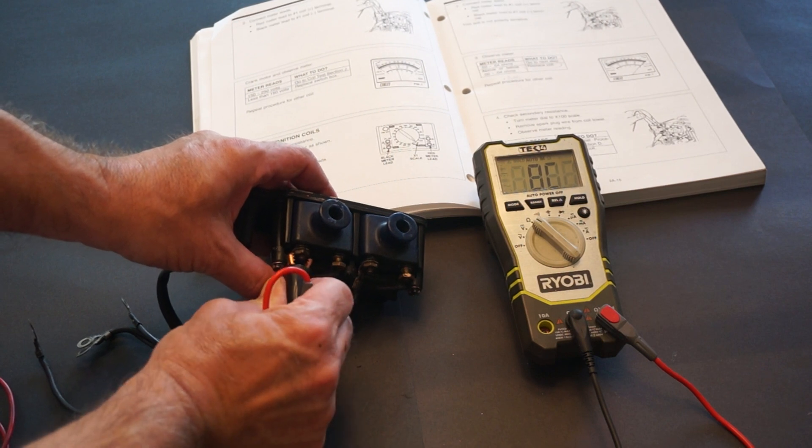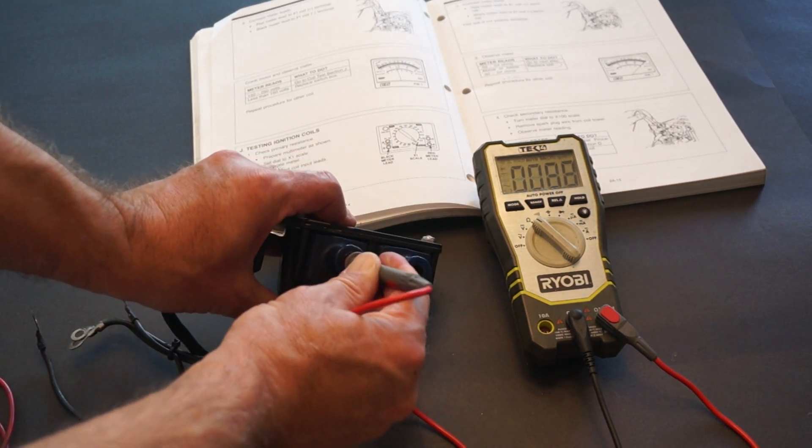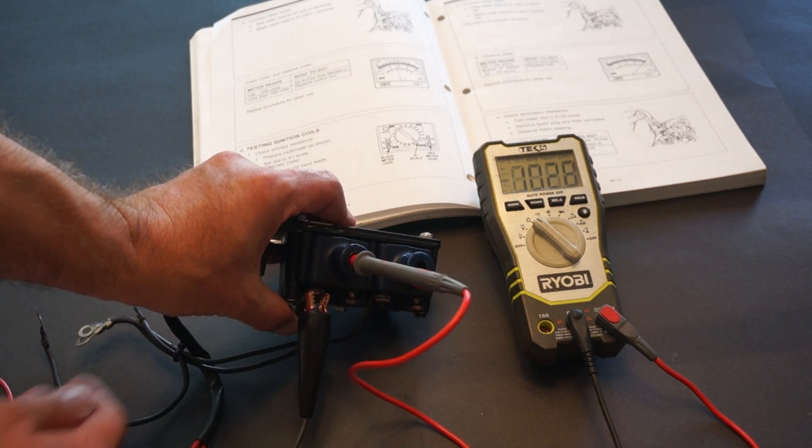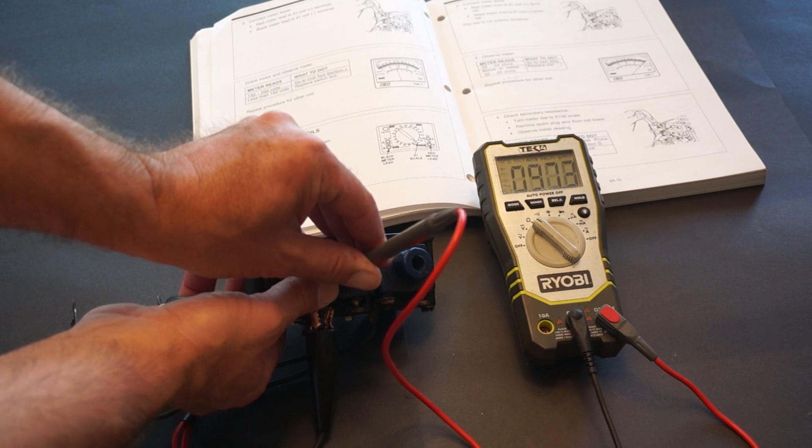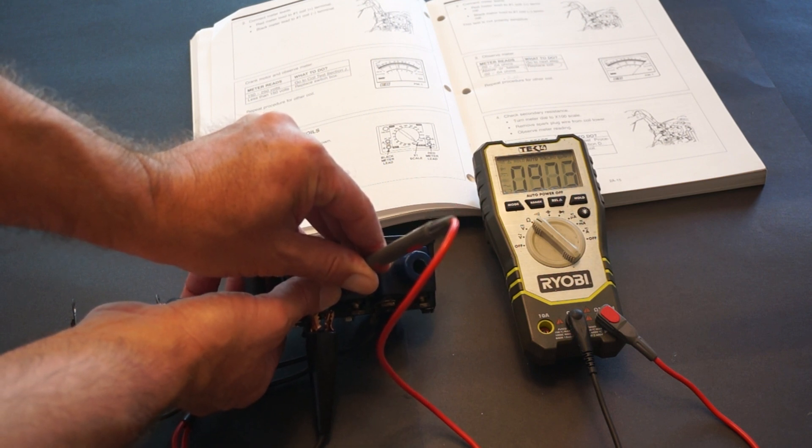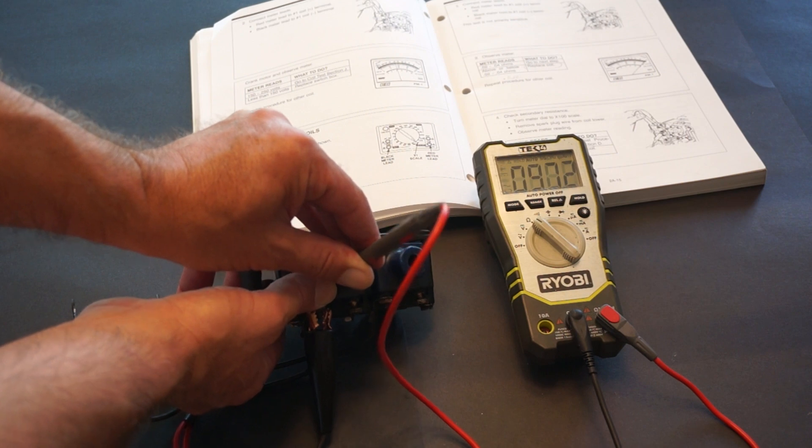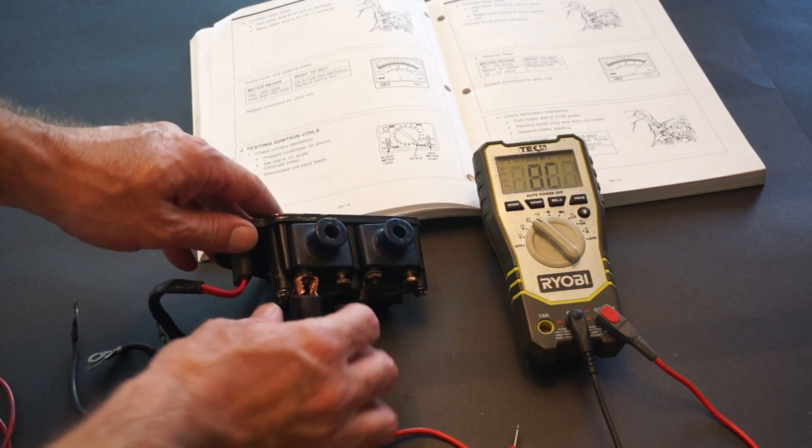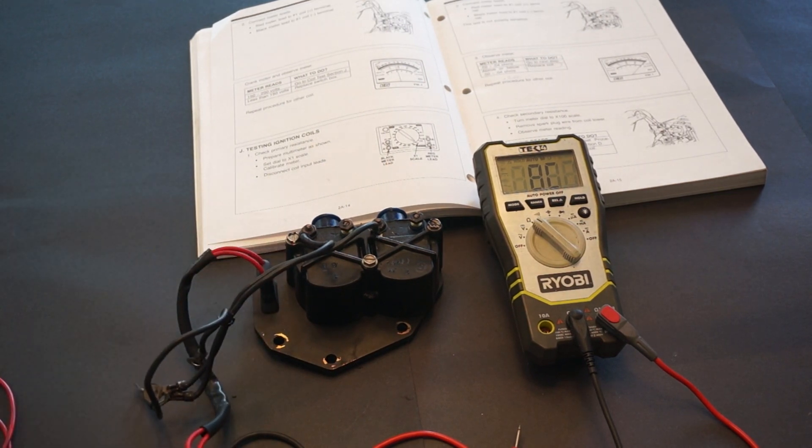Let's go to the left coil. Make sure you have a good contact here. This one reads 0.972 kilo ohms. It is between the spec of 800 to 1100 ohms. So with this, both coils are good and they can be put on the engine.